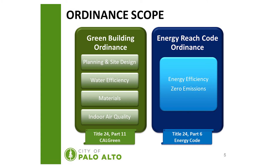The policy goals of the energy reach code aim to increase energy efficiency and reach zero emissions, and this resides under Title 24 Part 6 of the energy code.